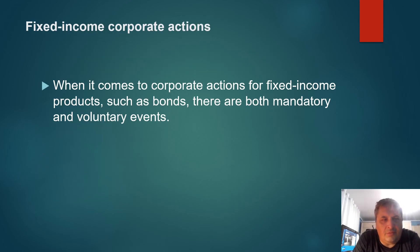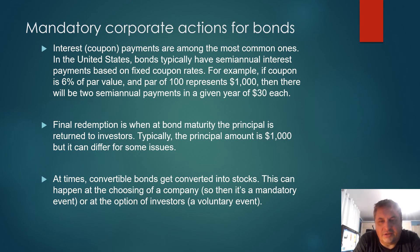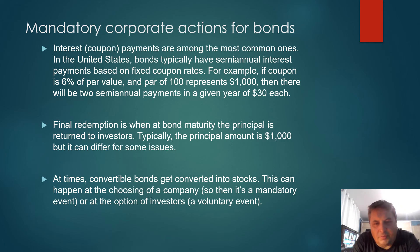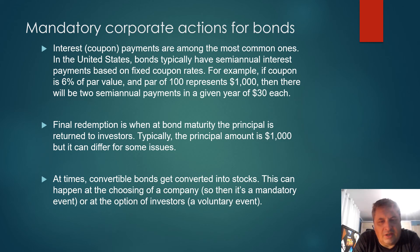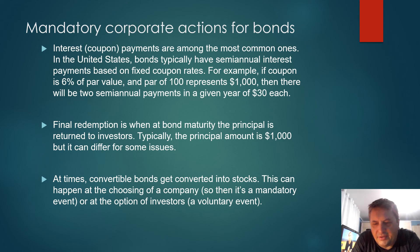Now let's go into fixed income corporate actions. When it comes to corporate actions for fixed income products such as bonds, there are also mandatory and voluntary events. Interest payments are among the most common mandatory ones. In the United States, bonds typically have semi-annual interest payments based on fixed coupon rates. For example, if a coupon is 6% of par value and par of 100 represents $1,000, there will be two semi-annual payments of $30 each — you will get $60 every year for every $1,000 bond you hold.